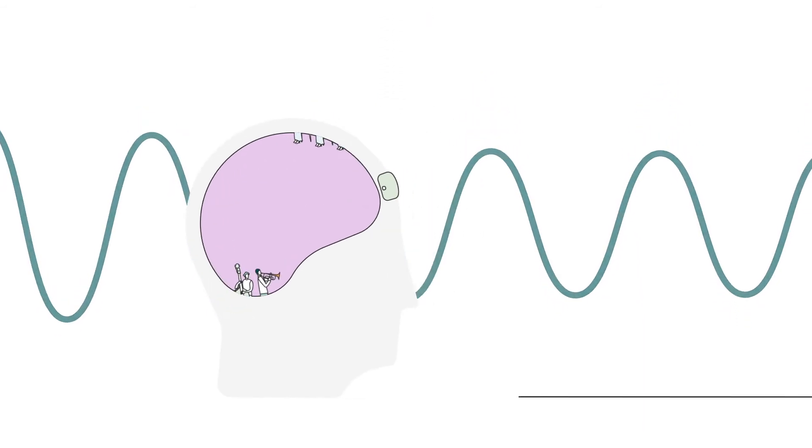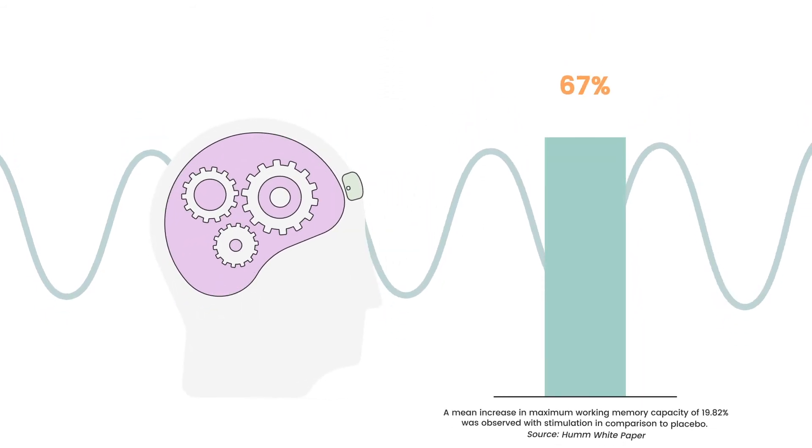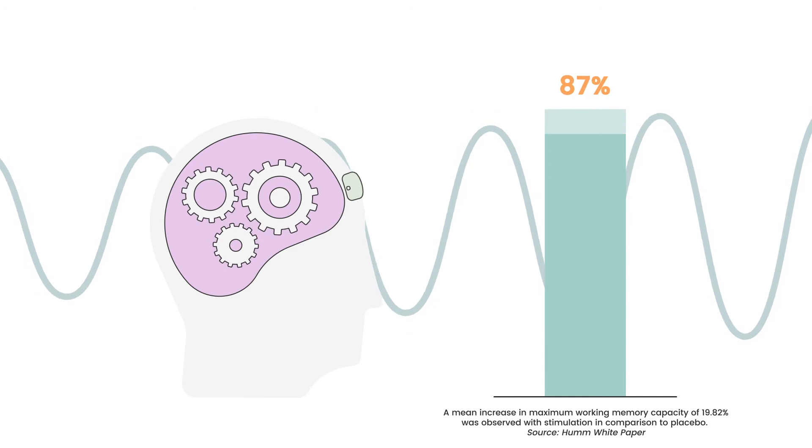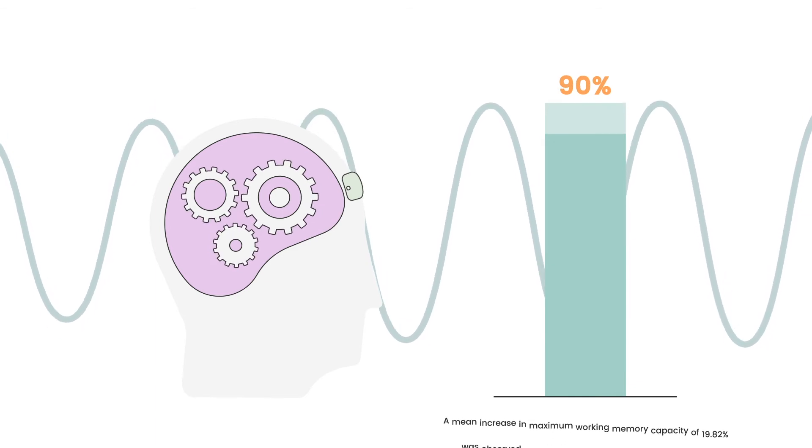In a controlled study at the University of California, Hum was found to improve working memory by 20% compared to a placebo.